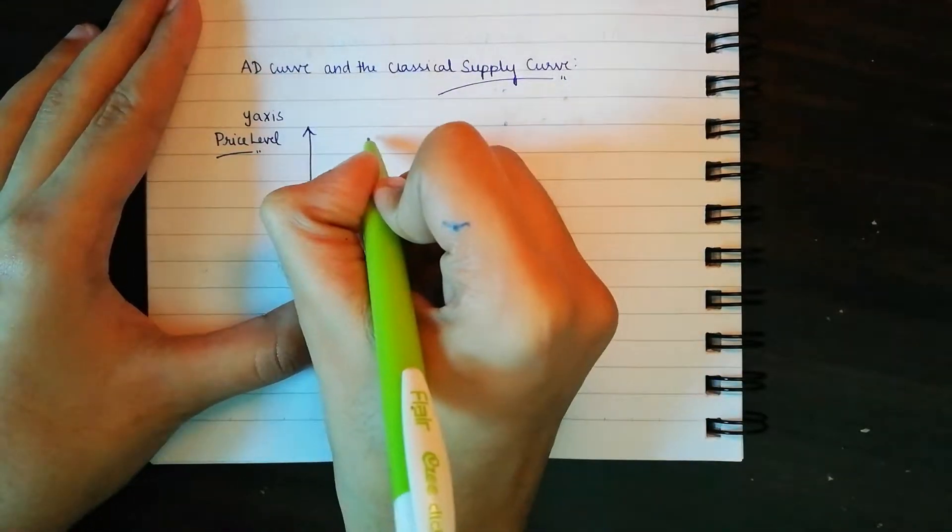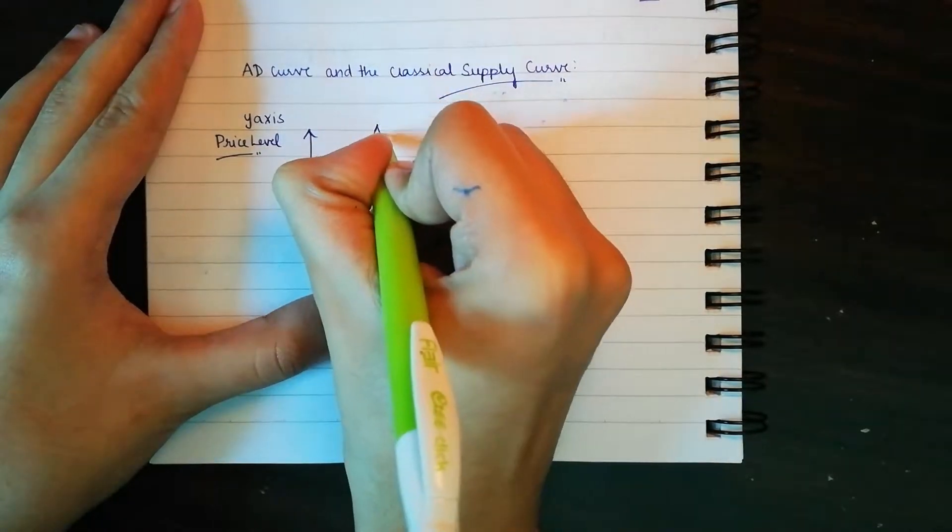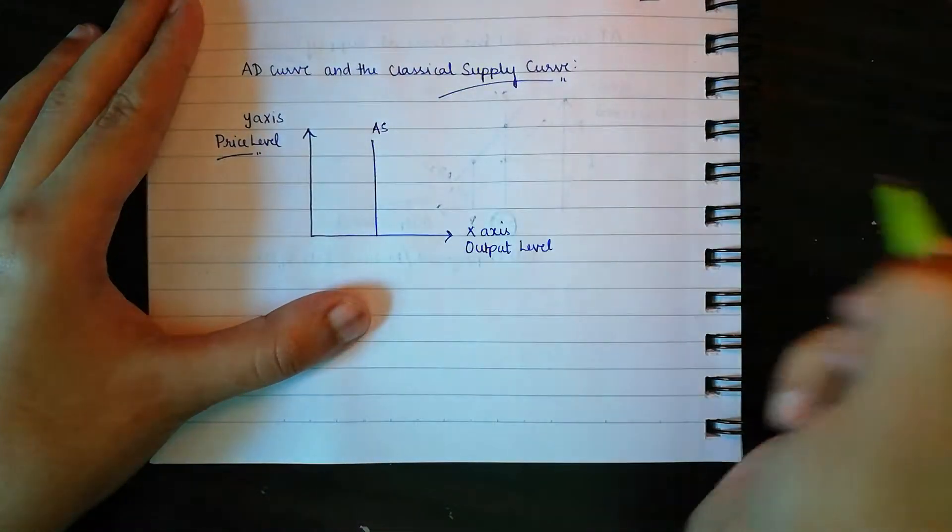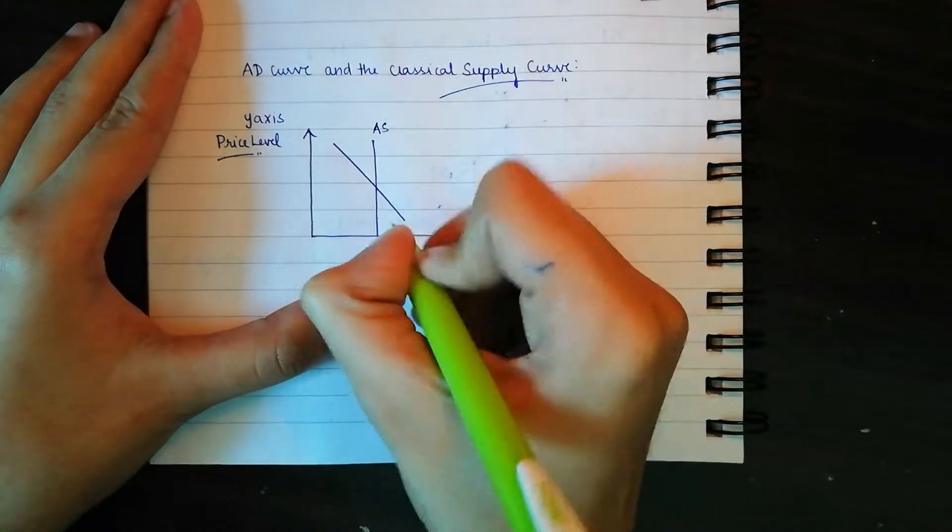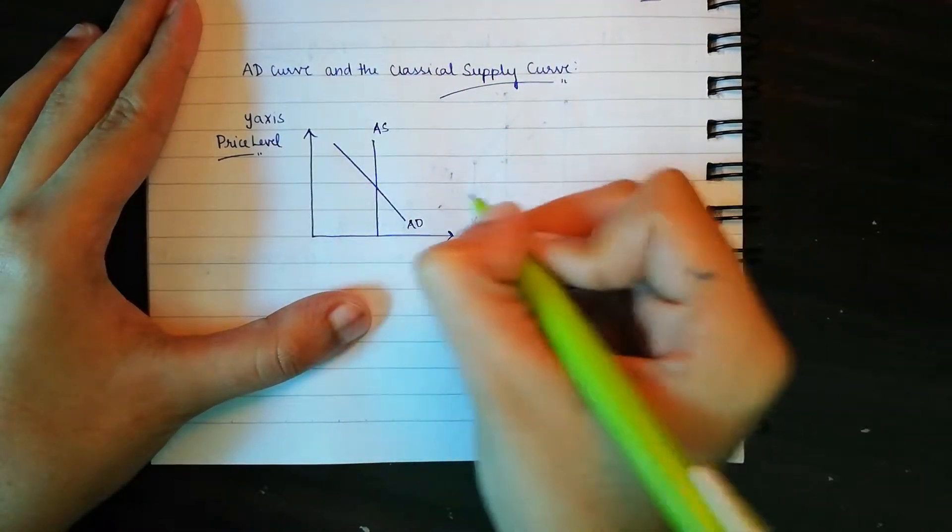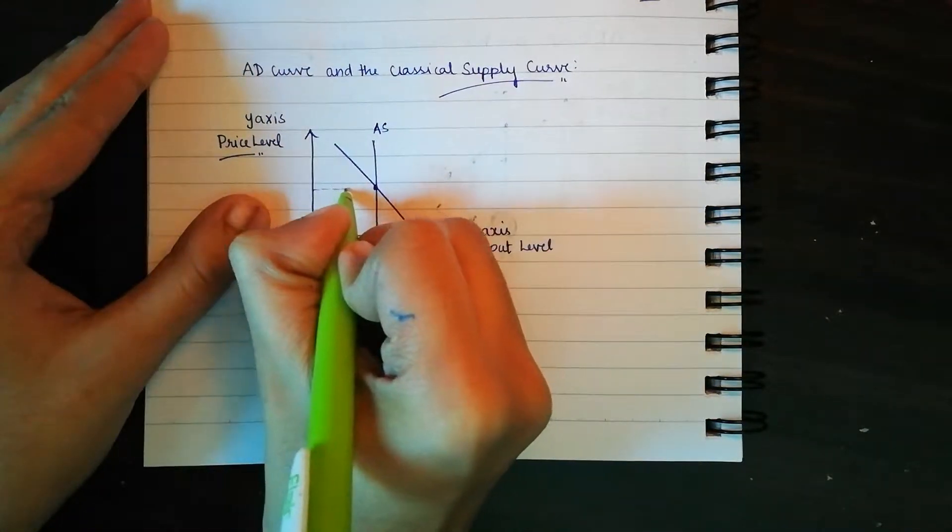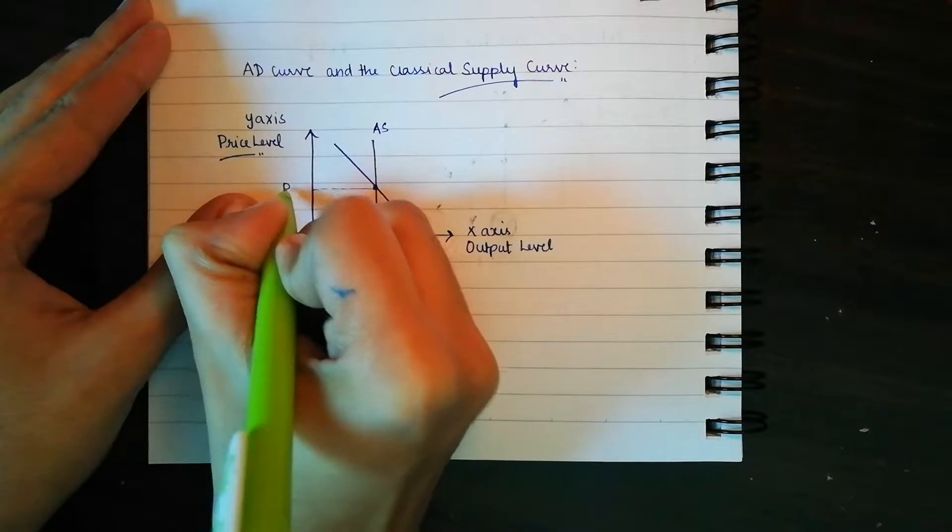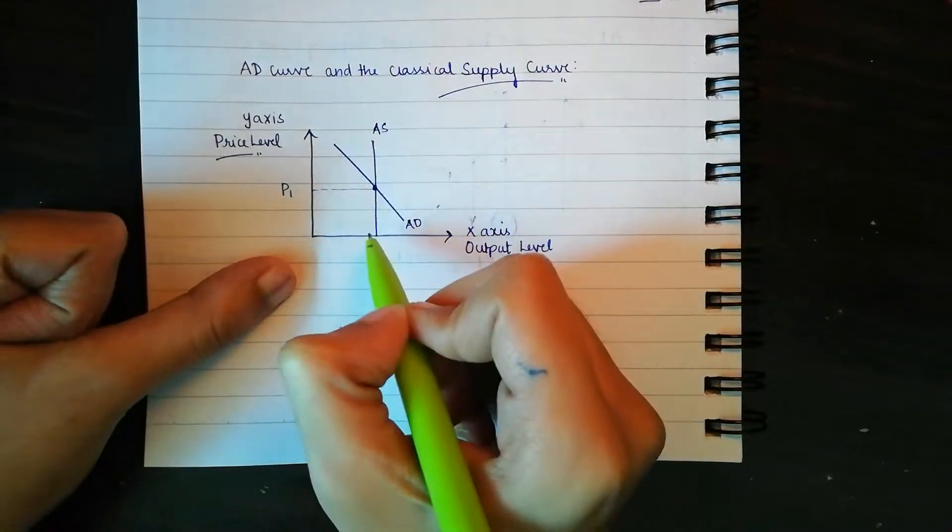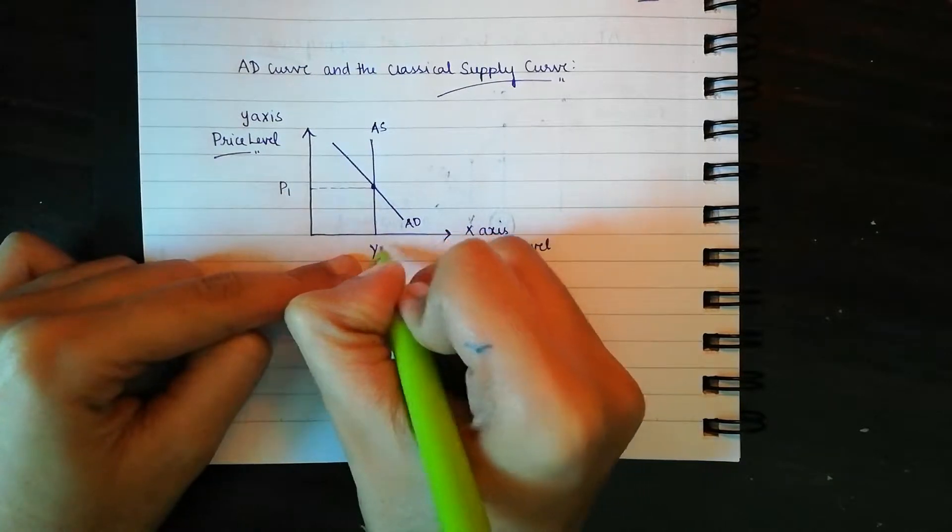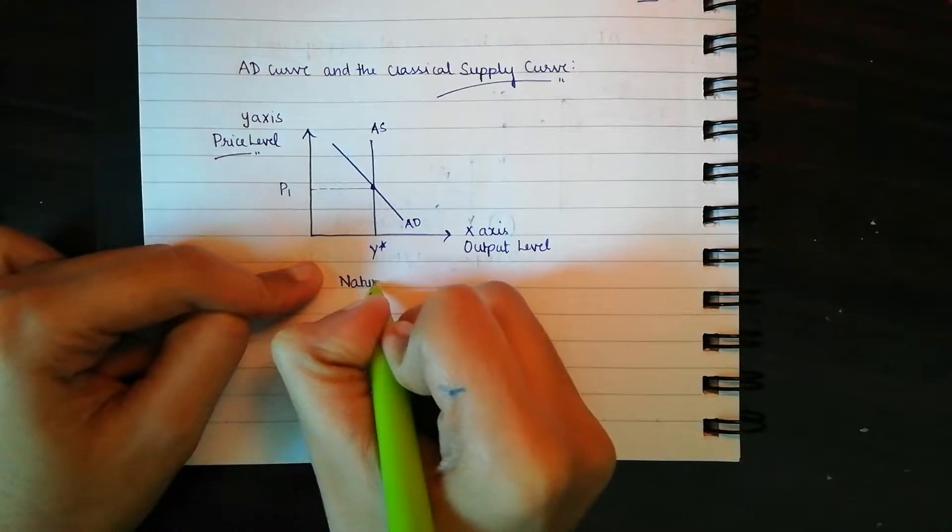I'll start with the classical supply curve, that is your long vertical line or aggregate supply curve, and your usual downward sloping aggregate demand curve. This would be operating at a price level of P1. Now the output, since it's a classical supply curve, will be operating at Y star, that is at your natural rate of unemployment.